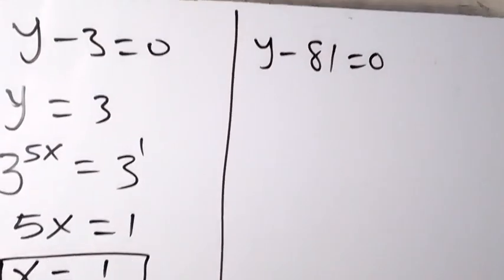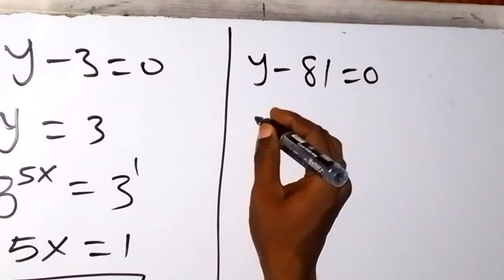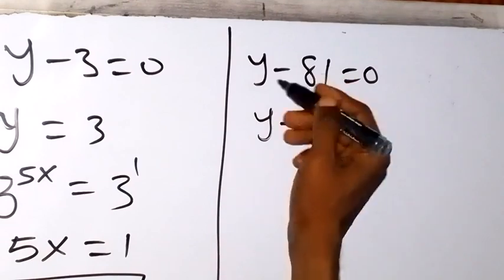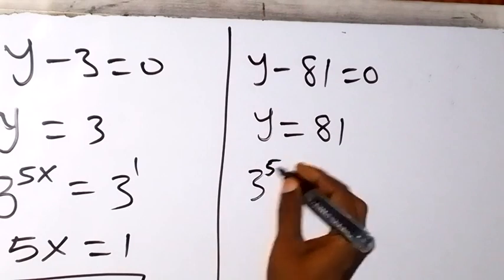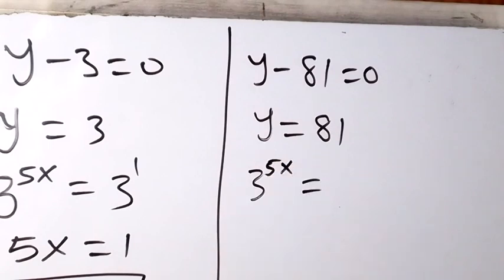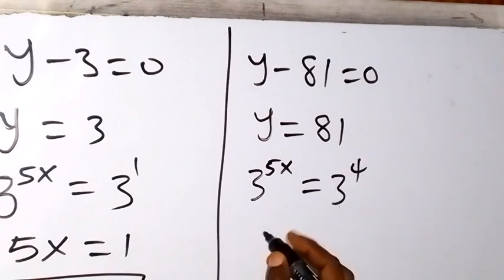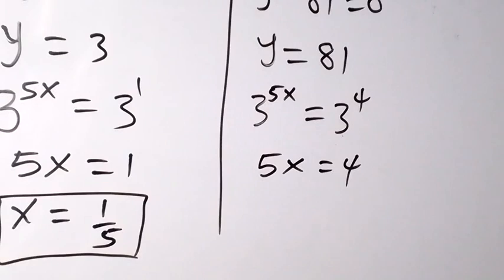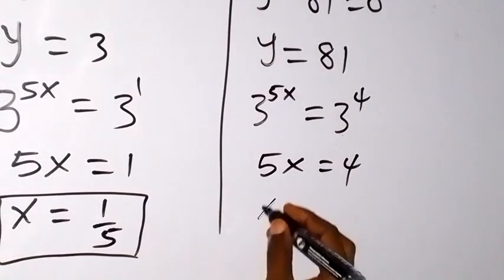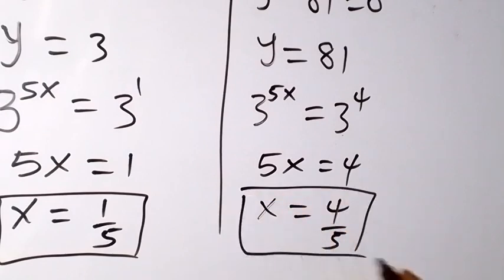For the other solution, y minus 81 equals 0 means y equals 81. Since y equals 3 raised to the power 5x, and 81 equals 3 raised to the power 4, the bases are equal so we equate the powers: 5x equals 4. Dividing both sides by 5 gives x equals 4 over 5. So we have two values of x.